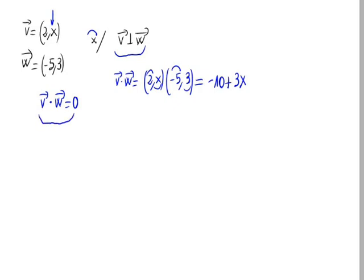As we want these two vectors to be perpendicular, we have to make this result equal 0, so minus 10 plus 3x equals 0.